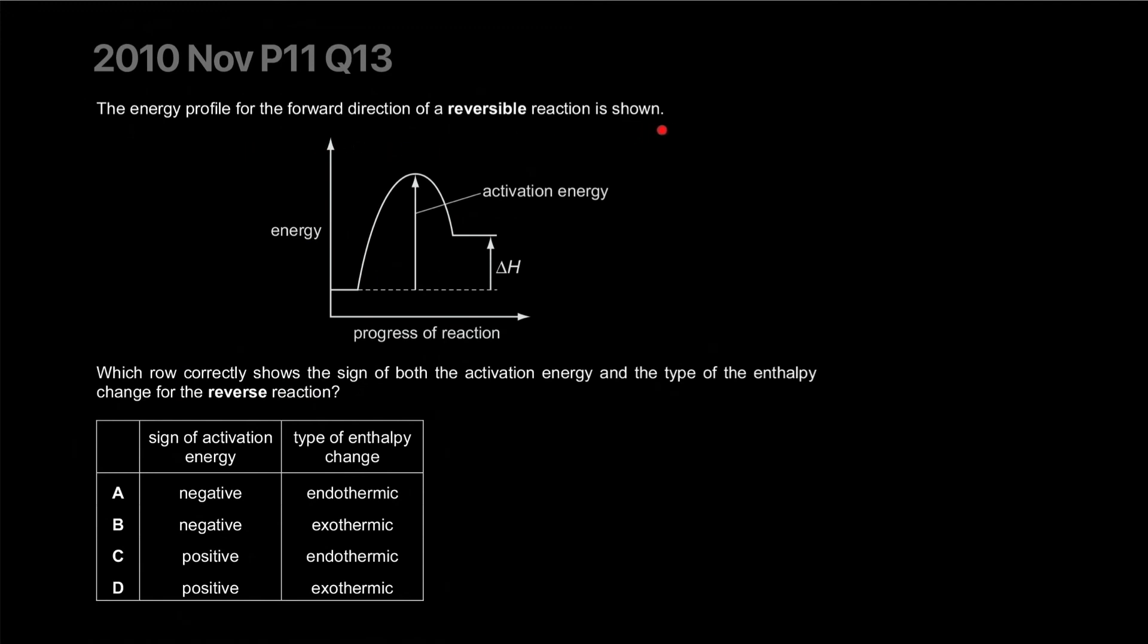The energy profile for a forward reaction of a reversible reaction is shown. For the reversible reaction, the enthalpy change is gonna be the exact opposite but negative, so enthalpy change will be negative value. Activation energy is from whatever is reacting - for the reversible reaction the products would be the reactants. The activation energy is positive. There's never a chance that activation energy is ever negative. It's actually exothermic. Correct answer is D.